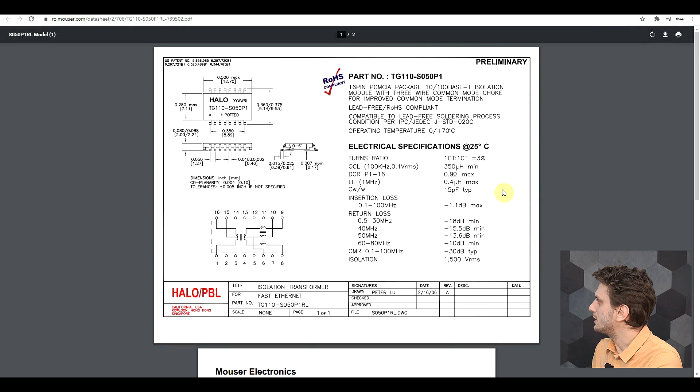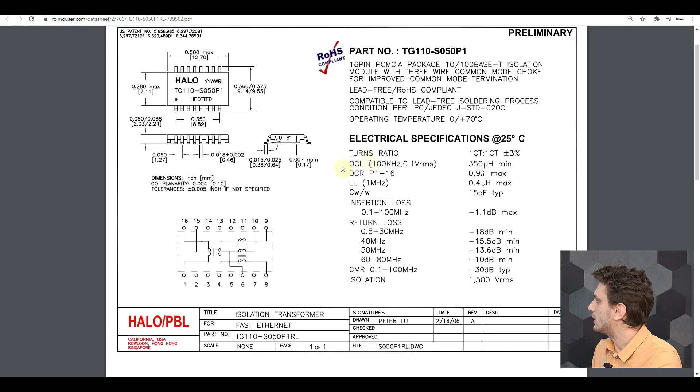Now a different kind of datasheet. This is for an isolation transformer. So this is something used in digital signal transmission. Here we also have our open circuit inductance. We have our DC resistance, our leakage inductance. But we also have this winding to winding capacitance. So this is the capacity that I measured on my transformer between primary and secondary. And here, since this is a high frequency isolation transformer where you want to isolate things, having this extra capacitance can have quite big consequences. So it's important to have it mentioned in the datasheet.